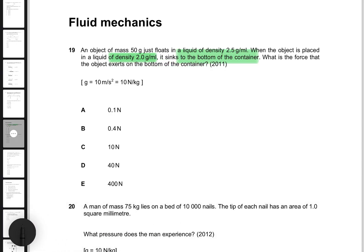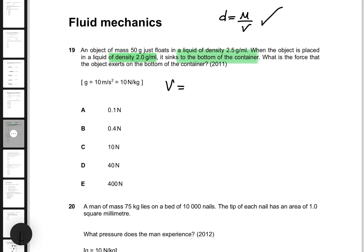Okay, so here's the deal. First, I want to find the volume of the water displaced by the mass. I know that according to the formula of density, density is just mass over volume. So if I want to find the volume, volume is just going to be the mass divided by the density.